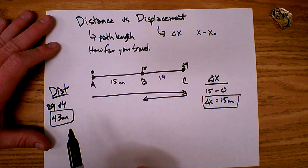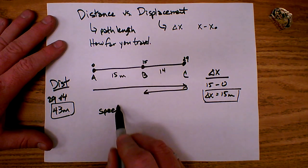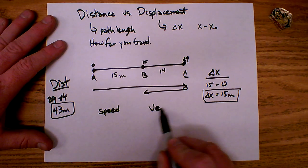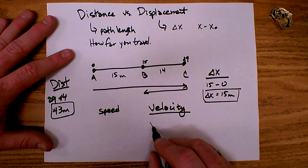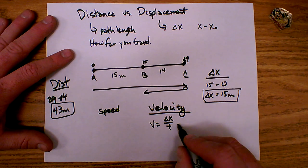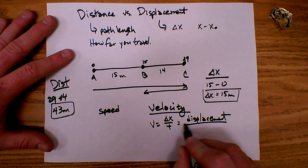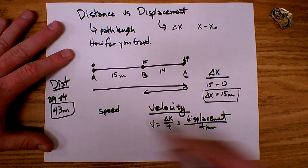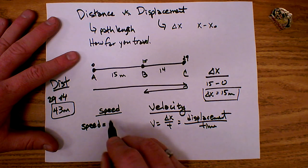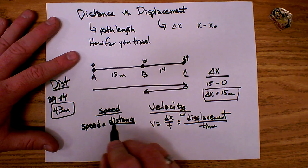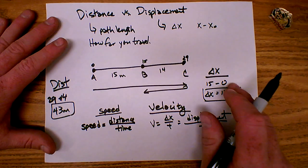So you can see the difference between distance and displacement. Similarly, there is a difference between speed and velocity. We just learned that velocity is equal to the displacement over time — the change of position, displacement over time. Speed, it turns out, is equal to distance over time. So that's the difference between speed and velocity, between distance and displacement.